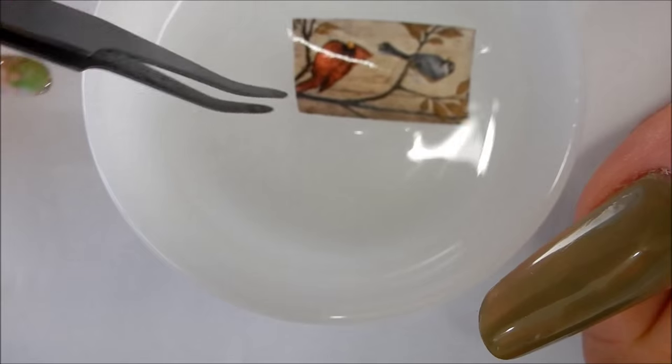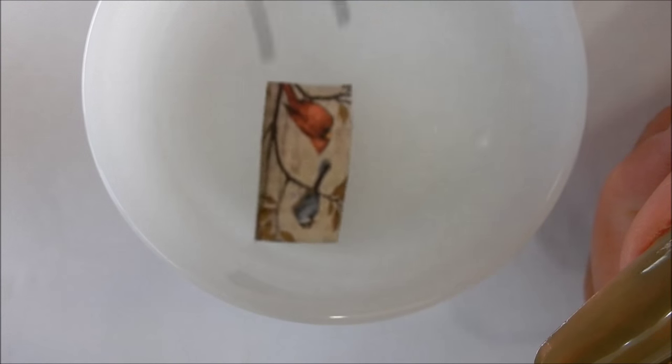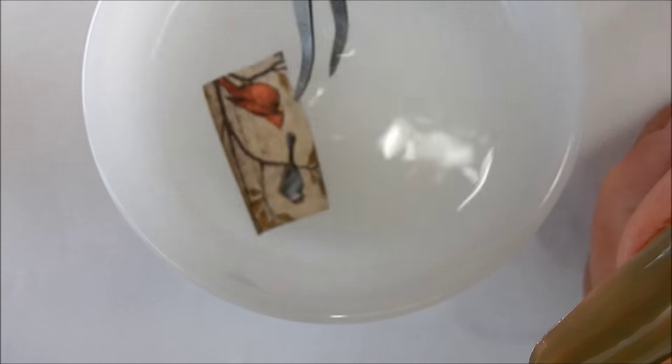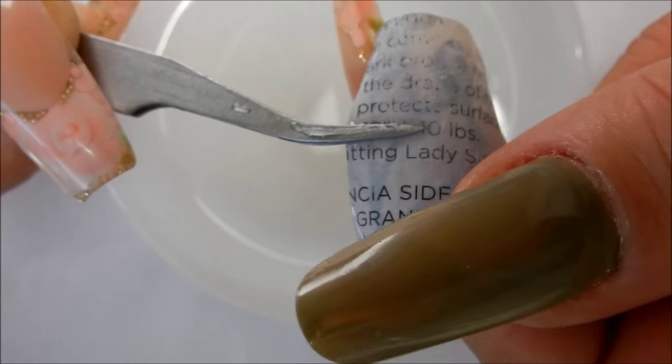Now we're gonna put it inside the hot water here. It doesn't matter if it sinks or whatever. It'll start getting soft. You just leave it in there for 30 to 40 seconds. It's been in the water for about 40 seconds to one minute.